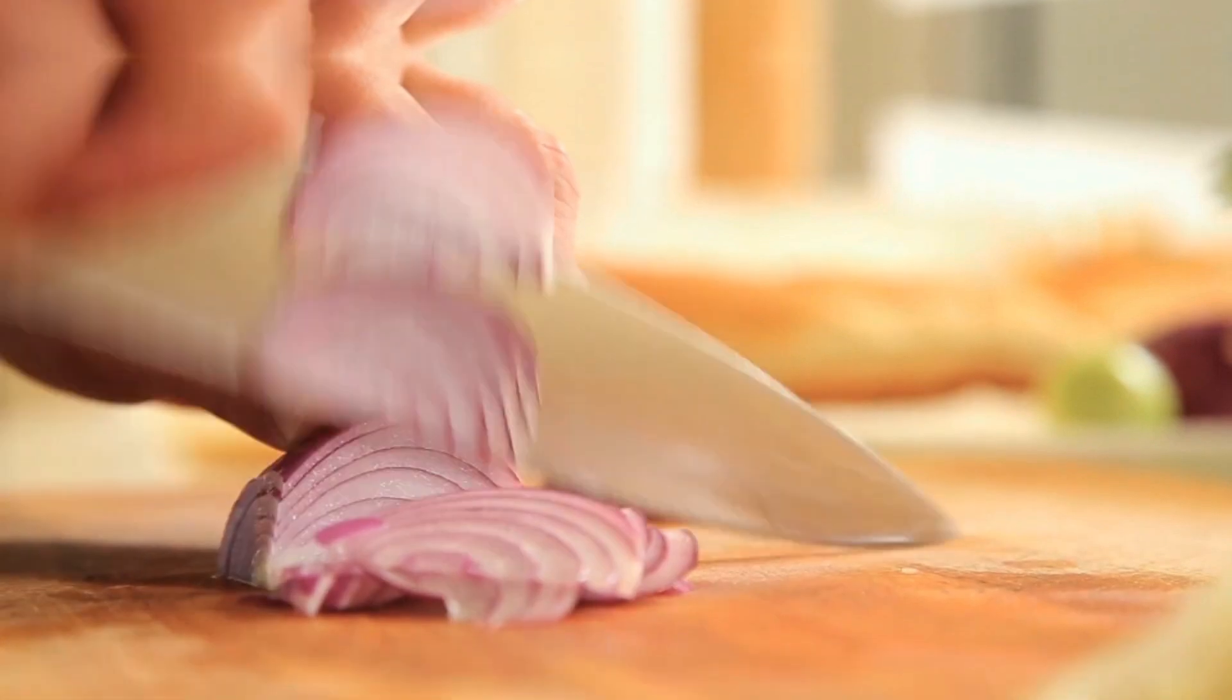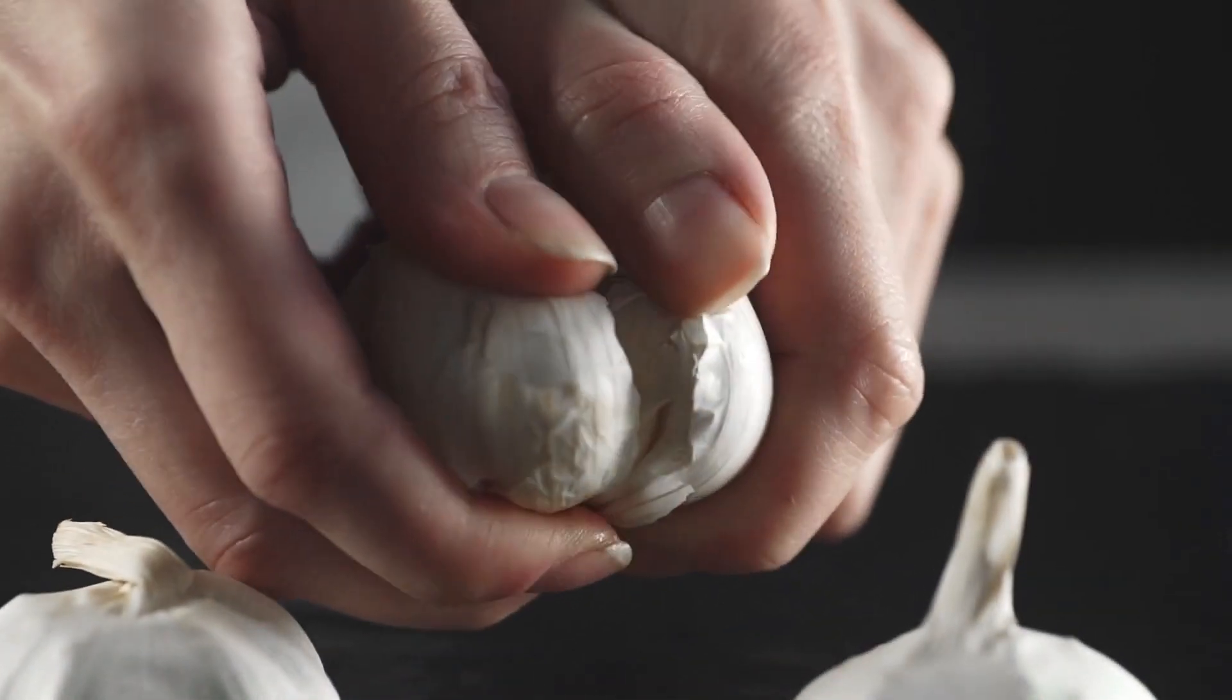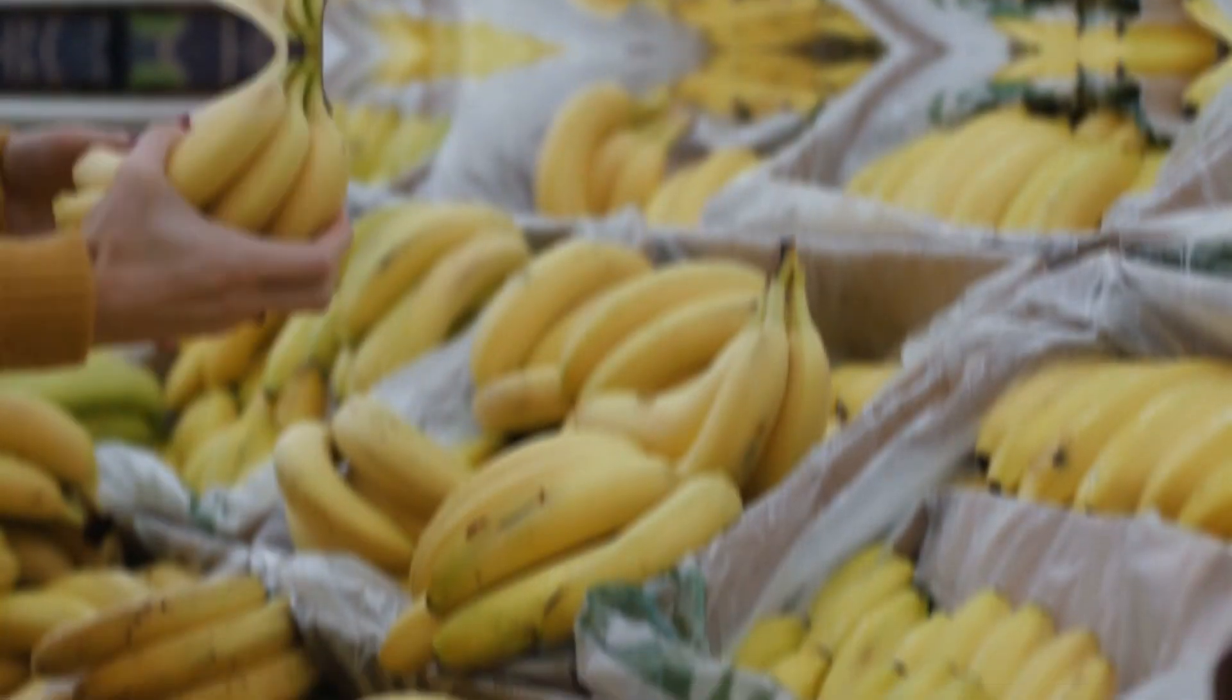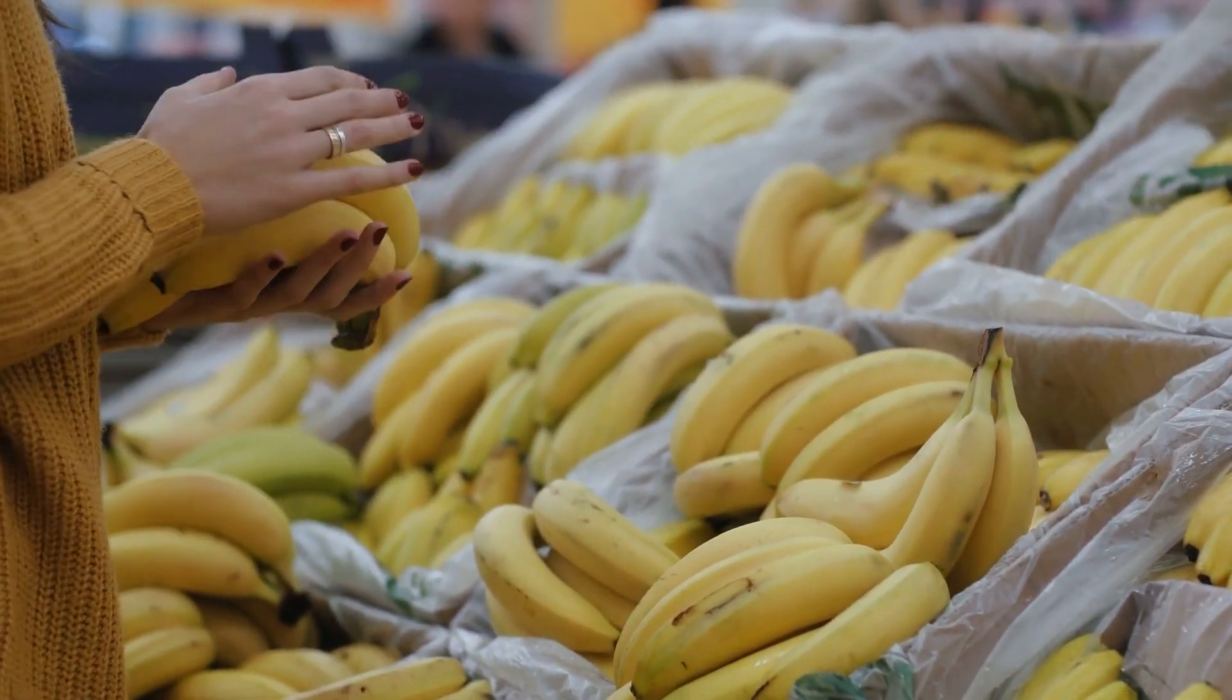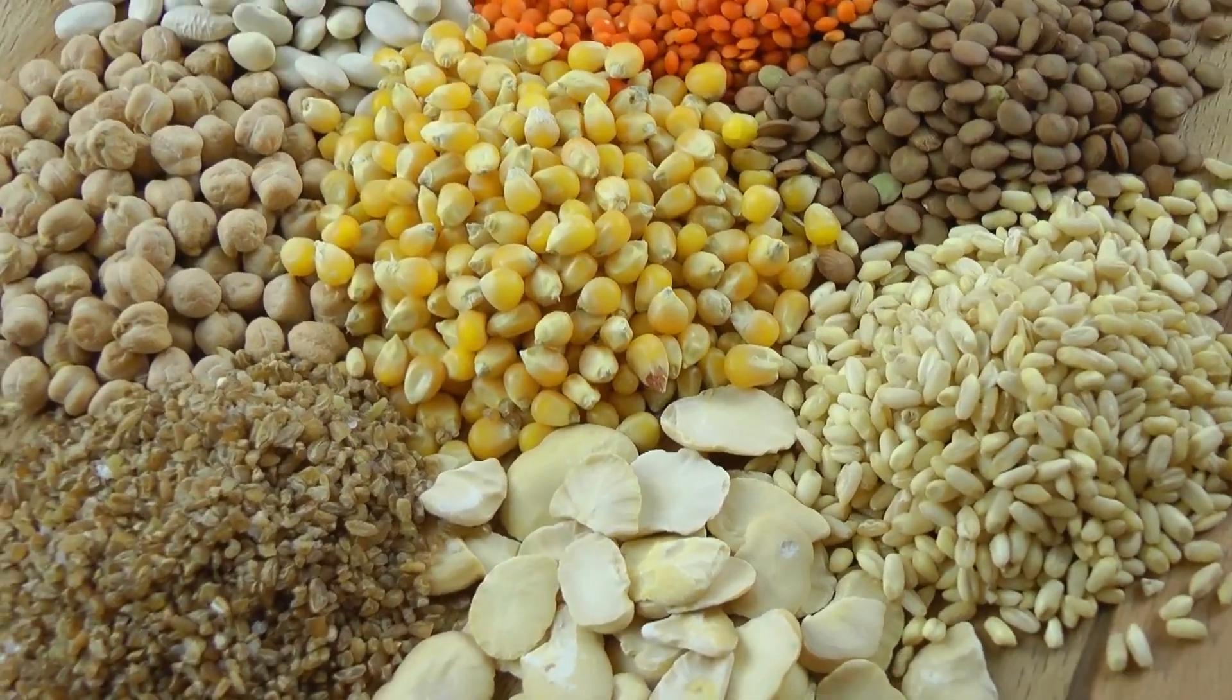As we consume foods rich in prebiotic fibers such as onions, garlic, bananas, and whole grains, these fibers remain undigested as they pass through our digestive system. Once they reach the colon, they serve as a food source for the beneficial bacteria.